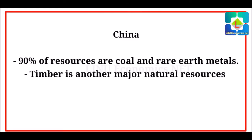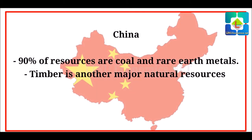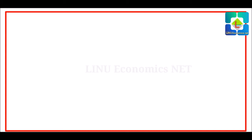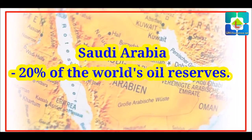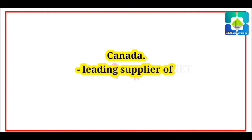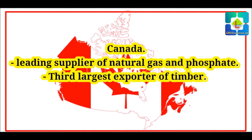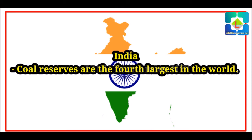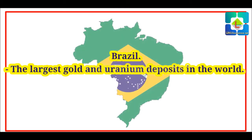Now we can check some examples of land or natural resources in different countries. In China, 90% of resources are coal and rare earth metals; timber is another major natural resource. Saudi Arabia has 20% of the world's oil resources and is second in the world. Canada is the leading supplier of natural gas and phosphate and is the third largest exporter of timber. India's coal reserves are the fourth largest in the world. Brazil has the largest gold and uranium deposits in the world. Different countries have different types and quantities of natural resources to produce goods and services.